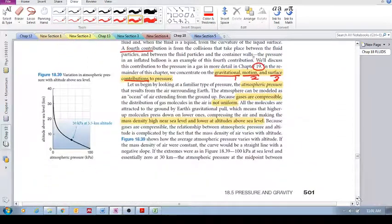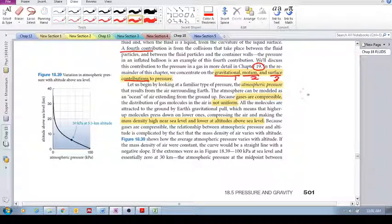So let's look at atmospheric pressure, just the pressure in the atmosphere, the pressure in the air that's surrounding the Earth. Gases are compressible, so air is compressible, and because air is compressible, it means that the air particles above the surface of the Earth are not distributed uniformly.